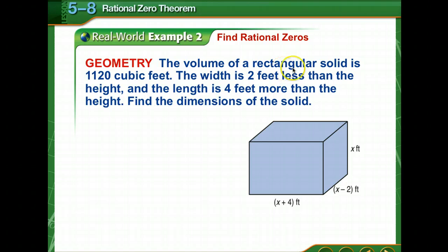Here we have the volume of a rectangular solid is 1,120 cubic feet. The width is 2 feet less than the height, so we're going to label height as x. Width is 2 less than the height, and the length is 4 more than the height. We're going to find the dimensions of this solid.